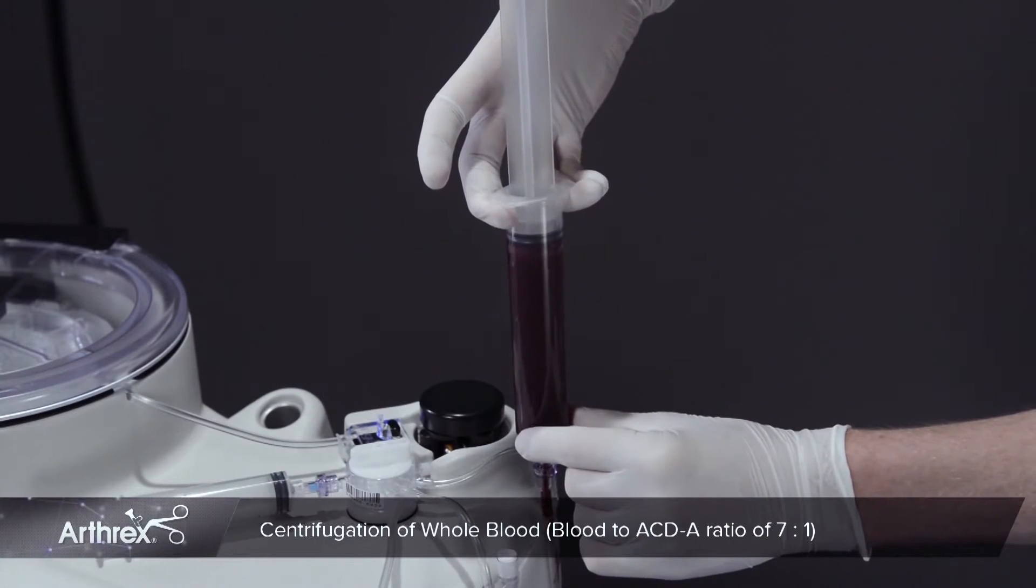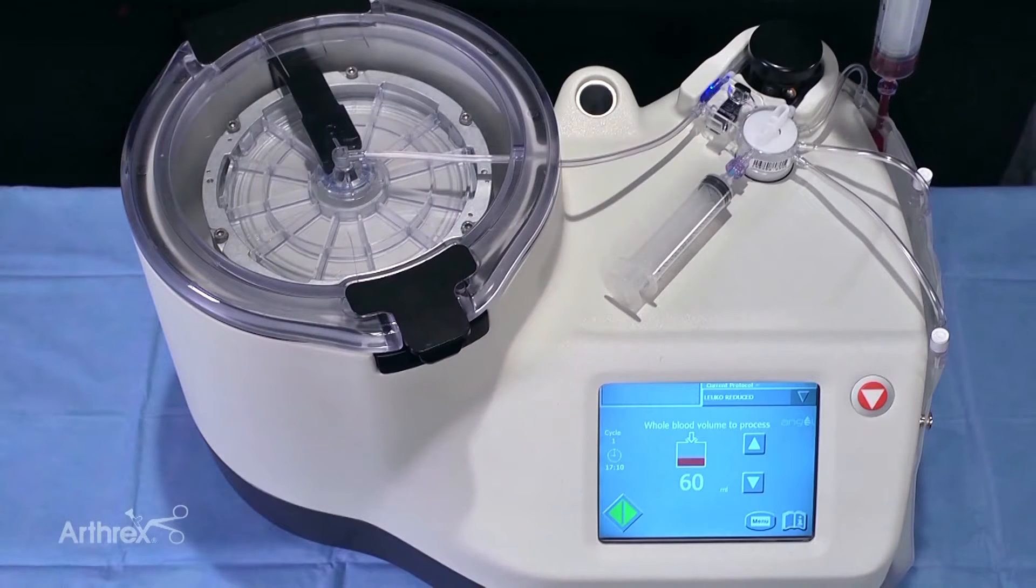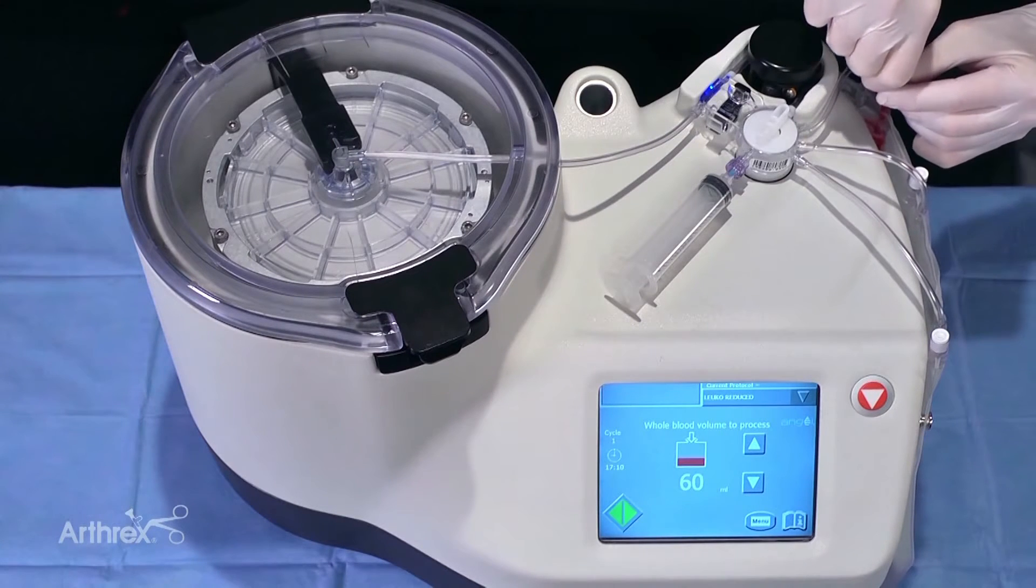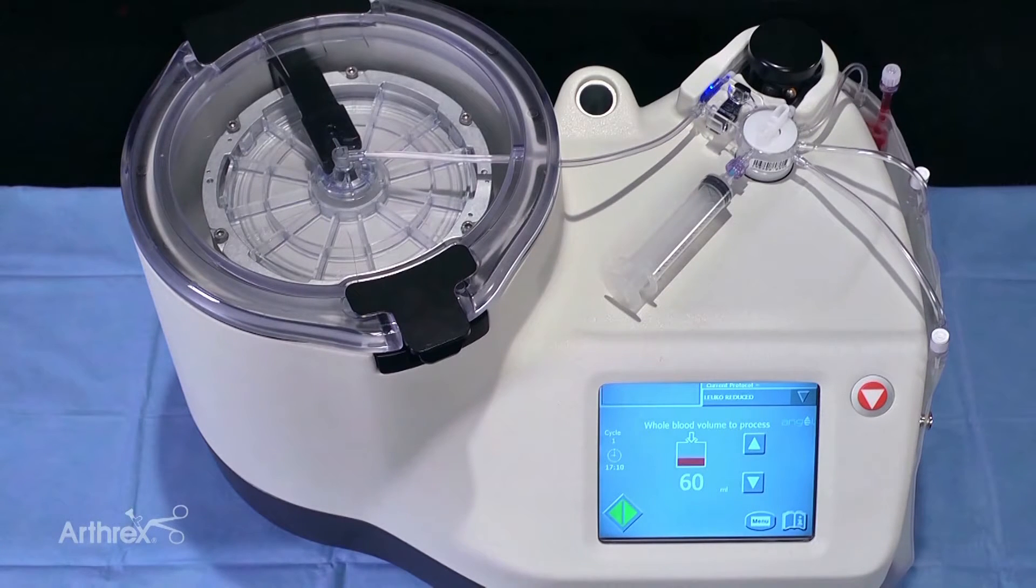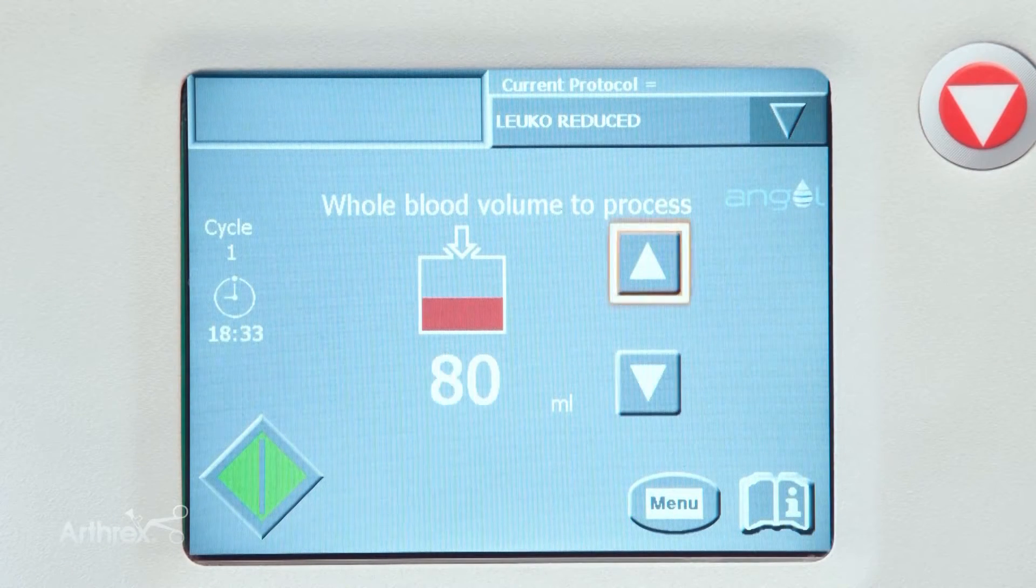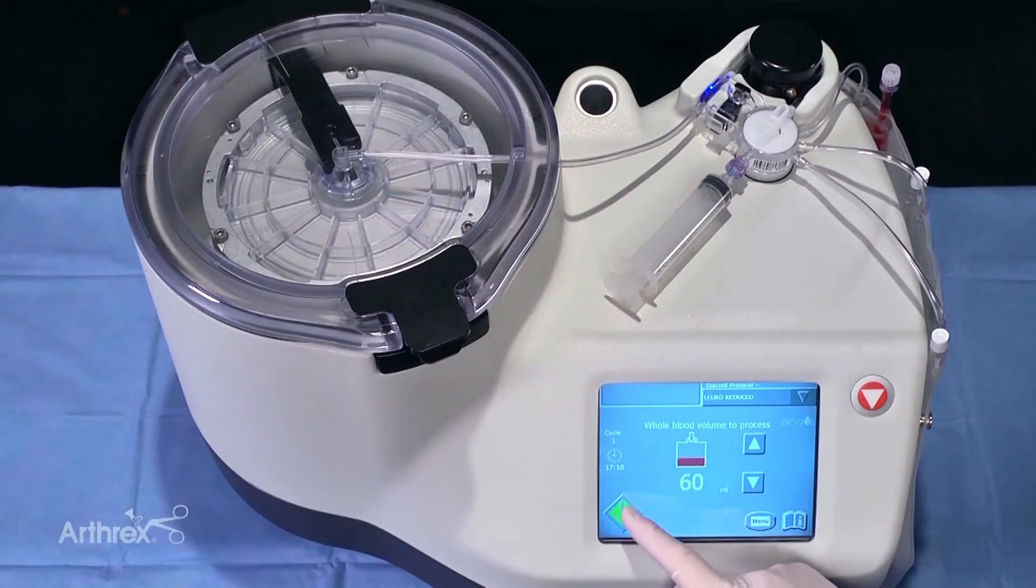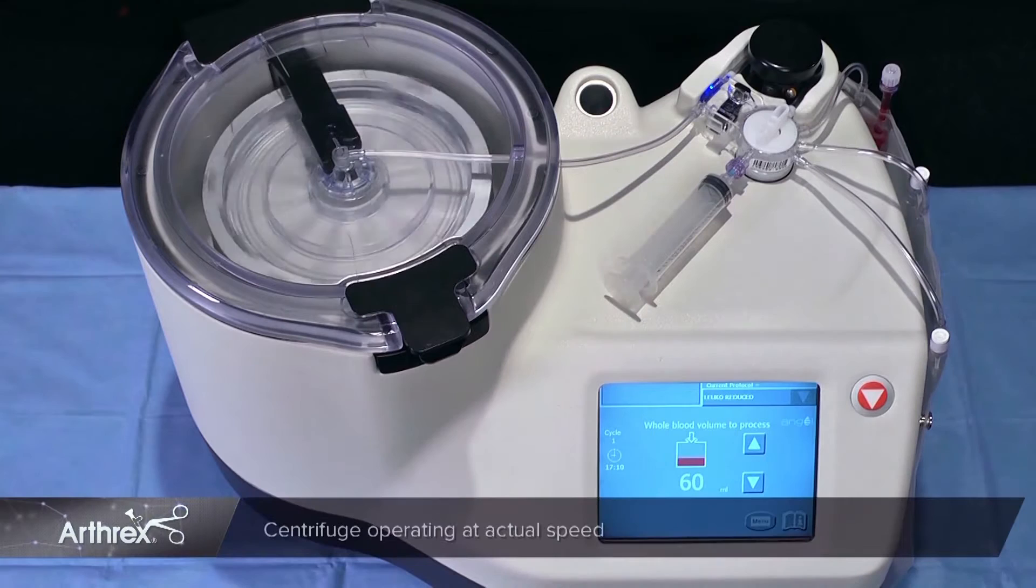To begin processing, introduce the blood sample into the whole blood end compartment and then recap the port. To process a different volume of blood, adjust accordingly with the volume arrows. Press the green start button to begin the centrifugation process.